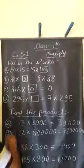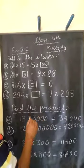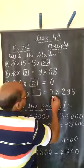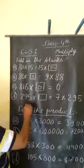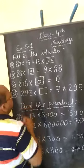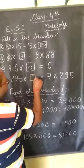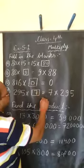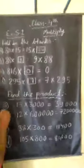Next: what number should be multiplied by 295 so that we get an answer equal to 7 multiplied by 295? Here, only the sequence is changed. On one side we have 7 into 295, and on the other side 295 is written first. So we fill in the blank with 7. When we multiply 295 by 7, we get the same value as 7 multiplied by 295.